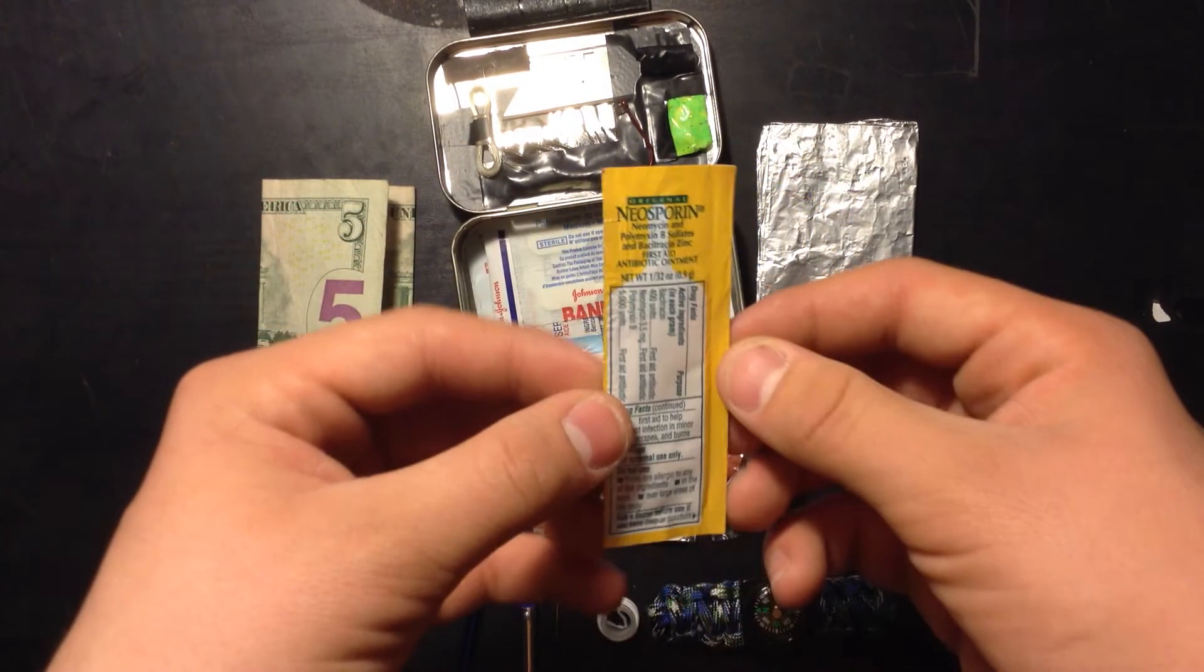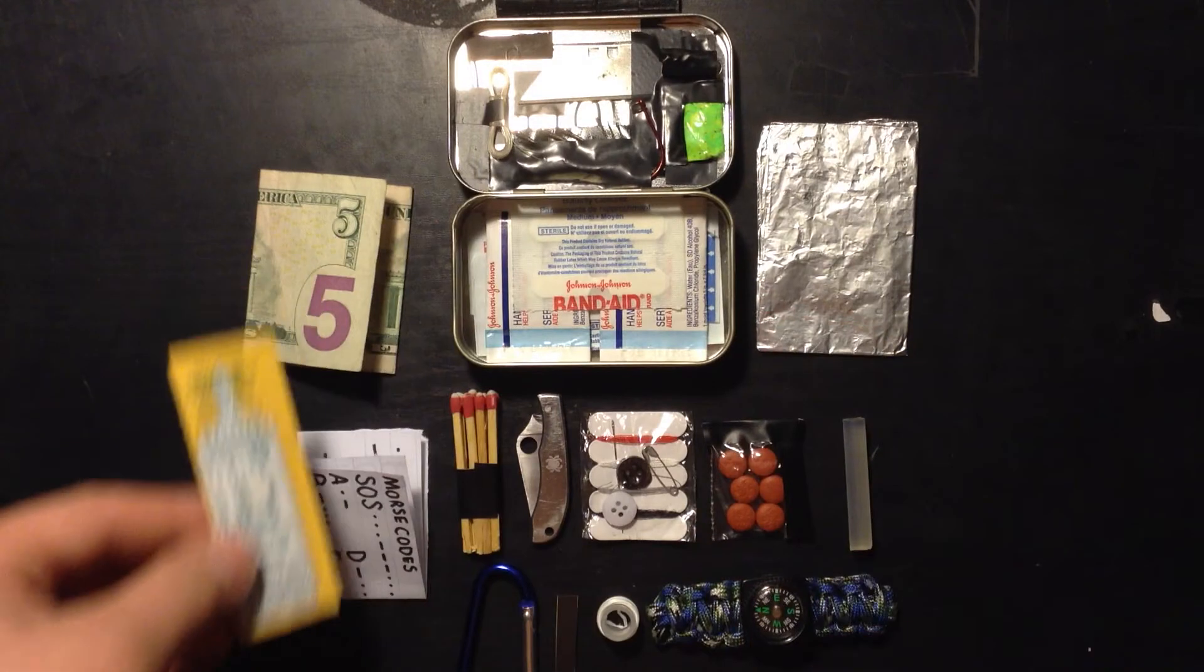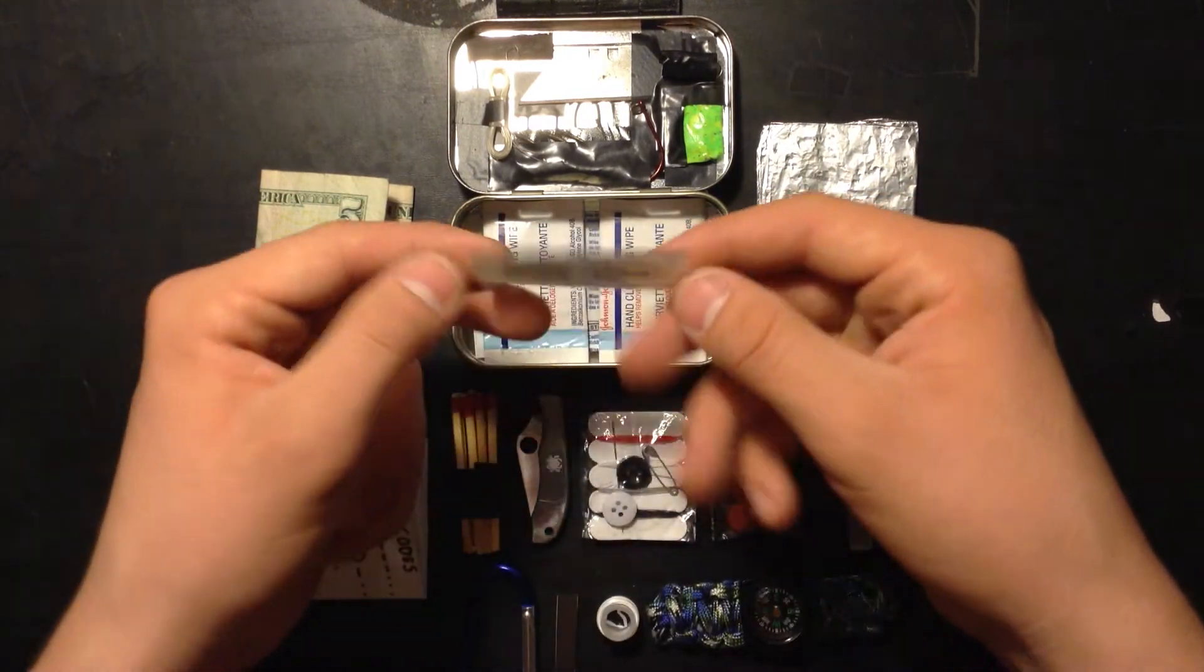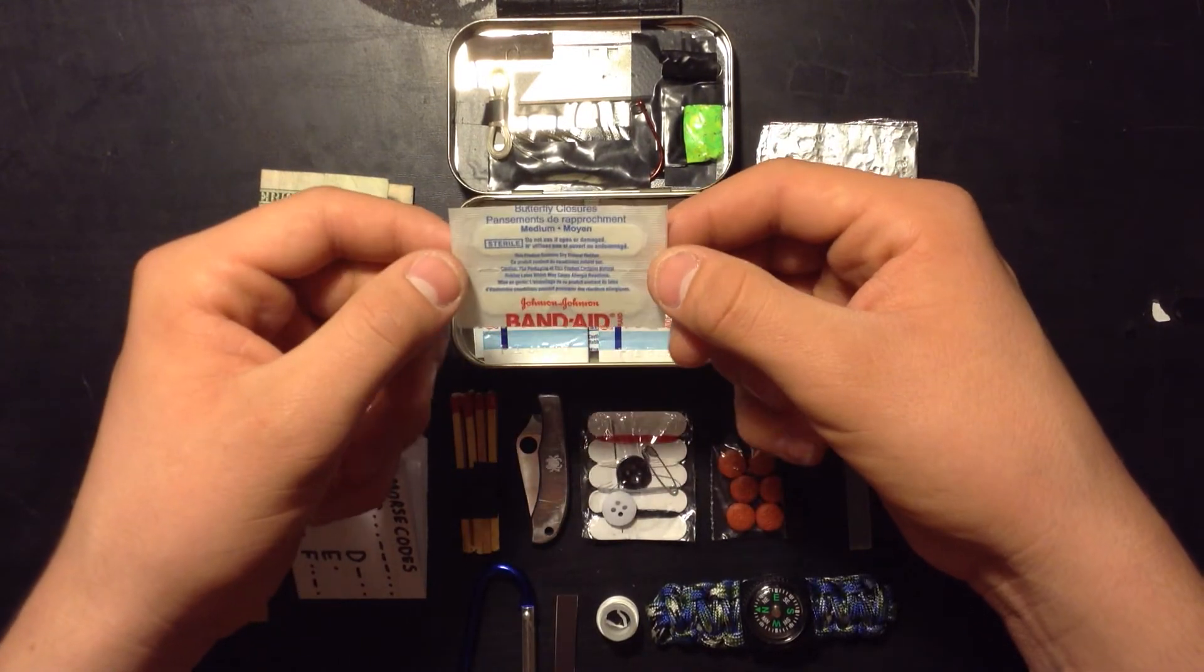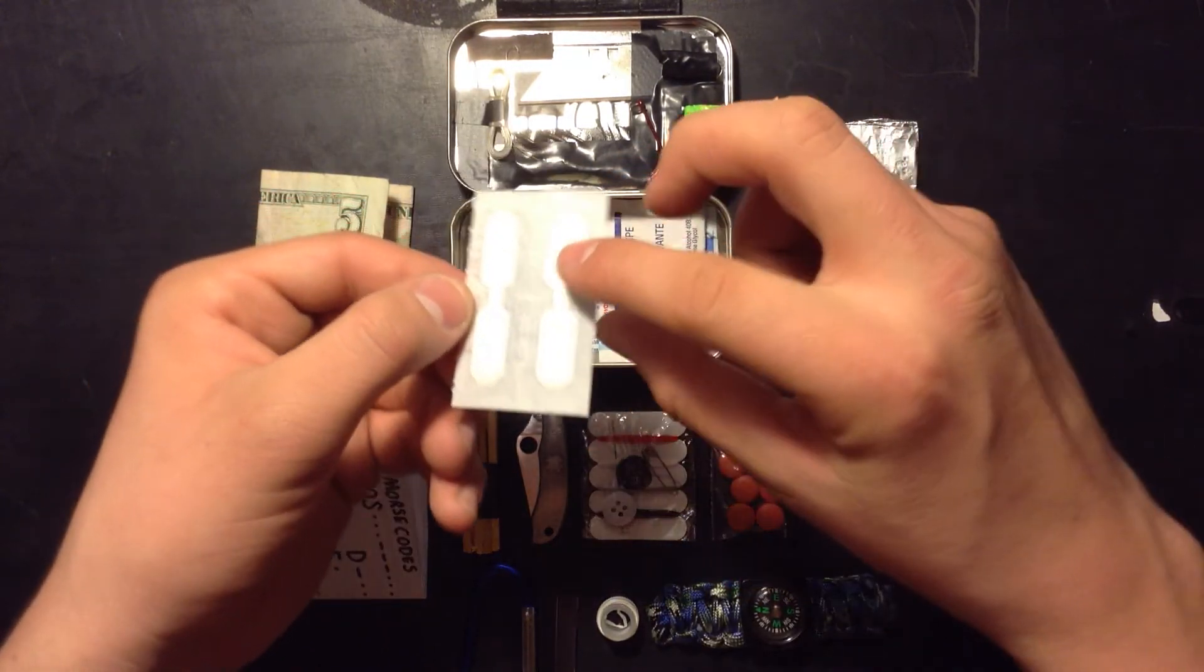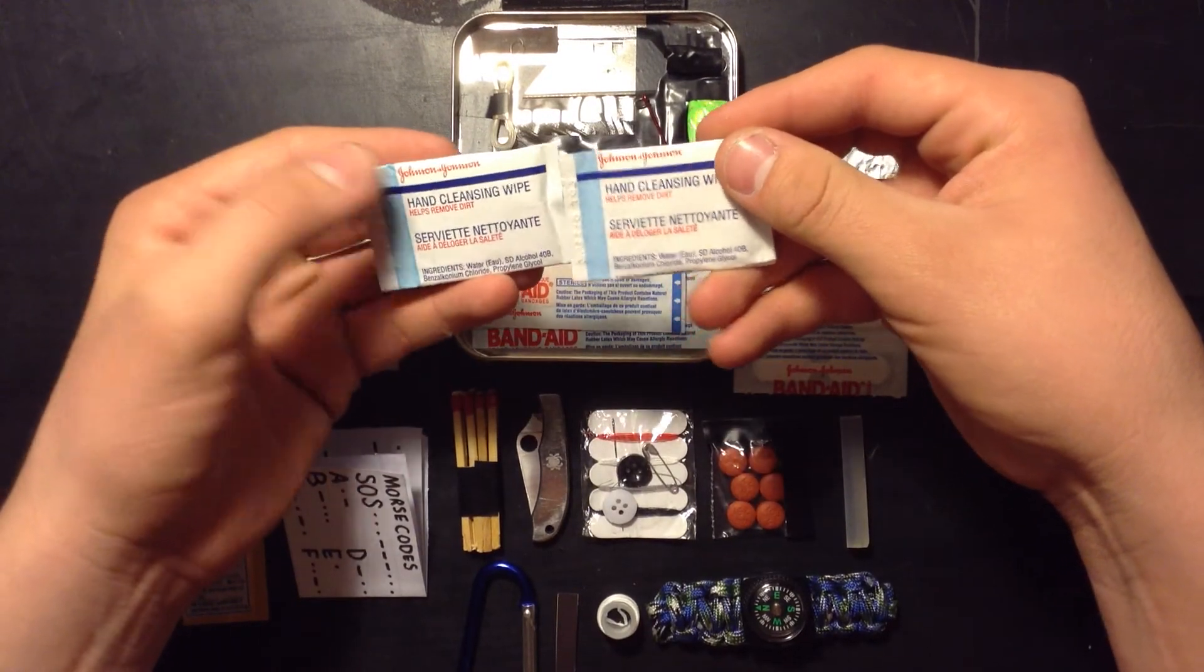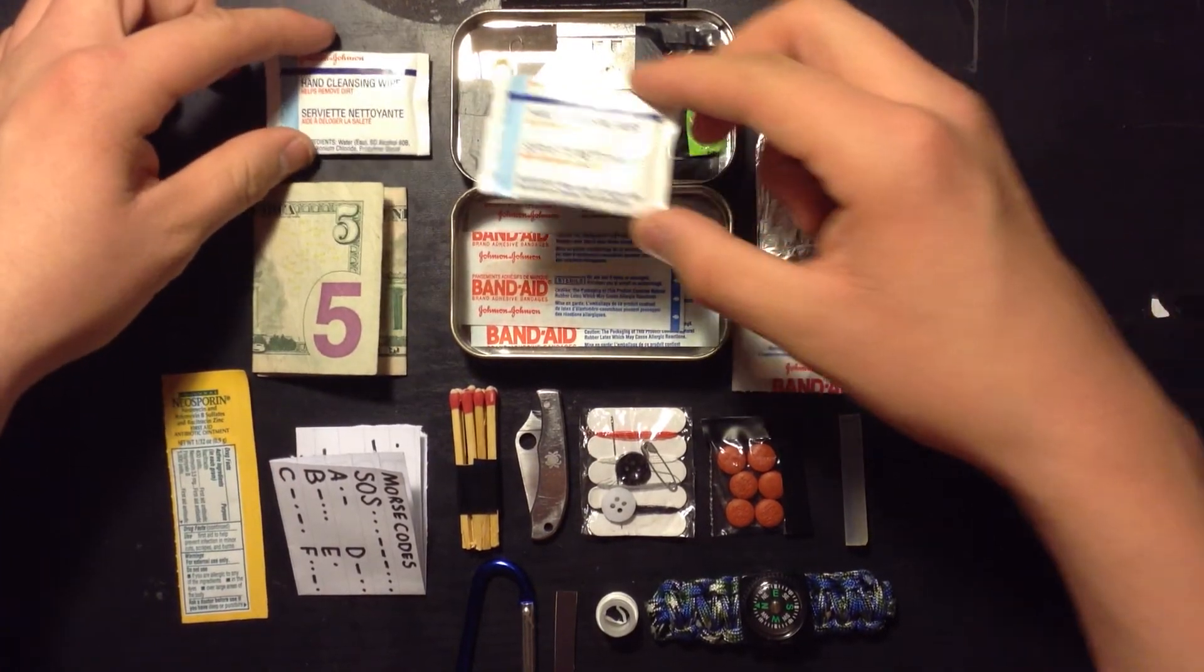Next, I got some Neosporin. I got this from a first aid kit, and it's really tiny and slim, so I thought this would be pretty neat to put in here. Next, I got some butterfly bandages. These are pretty hard to come by. I was looking at like three different stores, couldn't find these. Next, I got two hand-cleansing wipes. You don't want to get sick while you're stranded. That can be very dangerous. Sanitizing is always important.